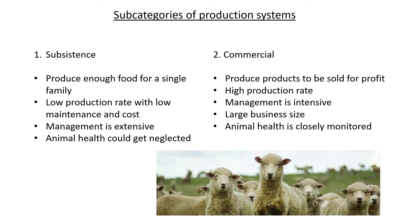Comparing subsistence and commercial: subsistence farming produces only enough food for a single family — not really for profit, just on a small scale. There is a low production rate with low maintenance and cost. Management is extensive, meaning animals are allowed to walk around with more space, sometimes using natural veld. Animal health can unfortunately get neglected because animals aren't monitored every day and fewer people are watching them, which means illness may be missed.